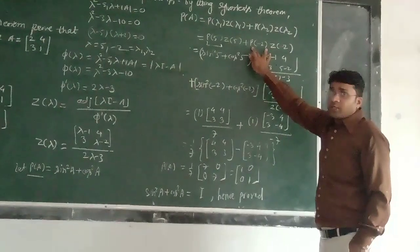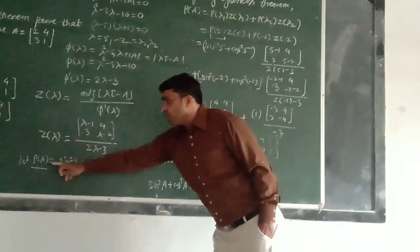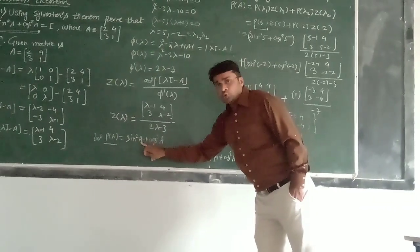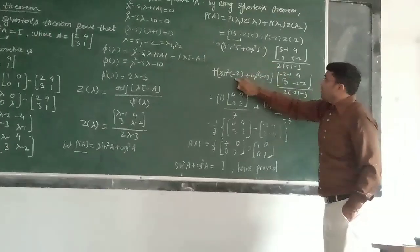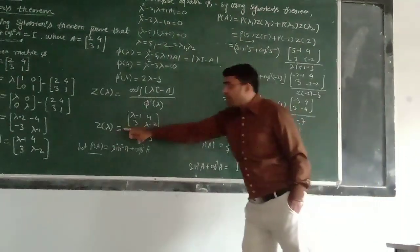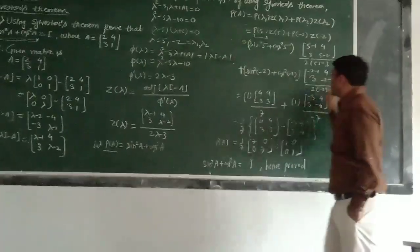Similarly, we find out P of minus 2. P of minus 2 again from here. A is replaced by minus 2. This is sin square minus 2 plus cos square minus 2. Then we have to find out Z of minus 2. Again, lambda will be replaced by minus 2 here. So, we get this quantity.